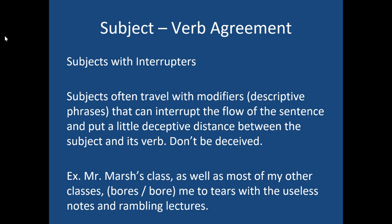Sometimes you'll have a really long interrupting phrase. For example: 'Mr. Marsh's class, as well as most of my other classes, bores or bore me to tears with the useless notes and rambling lectures.' The word 'classes' is very close to the verb, but the subject is 'class'. So you'd say 'Mr. Marsh's class bores me to tears.' The phrase 'as well as most of my other classes' is a prepositional phrase — a temptation. Even though it sounds like you're talking about multiple classes, the actual subject is still 'class'. Diagrammed, it's 'the class bores me'.